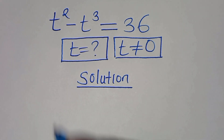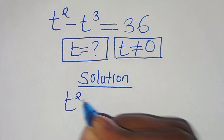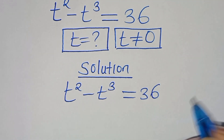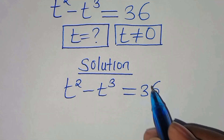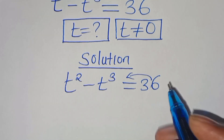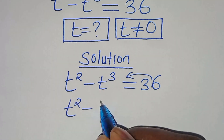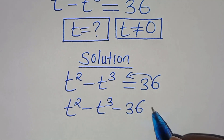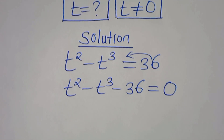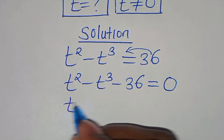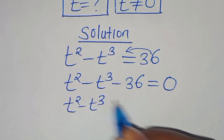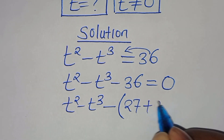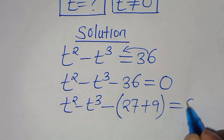Let's present a solution from here. We have t squared minus t to the power of 3, this is equal to 36. The first step is to take 36 on the left-hand side, so that we have t squared minus t cubed minus 36, this is equal to 0. We can rewrite 36 as 27 plus 9, this is equal to 0.